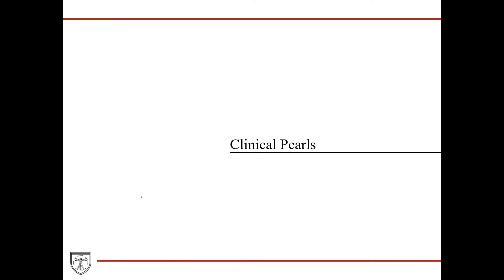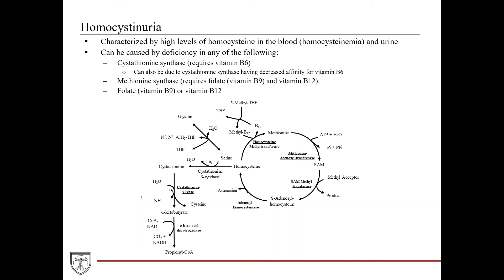Now some clinical pearls relevant to methionine metabolism. First, homocysteinuria — this is characterized by high levels of homocysteine in the blood and in the urine, hence the name homocysteinuria.